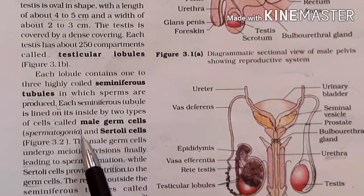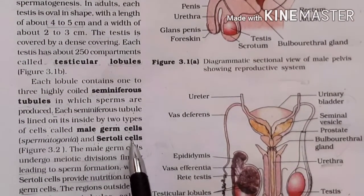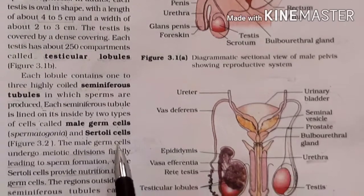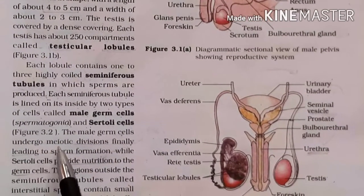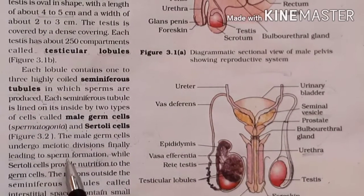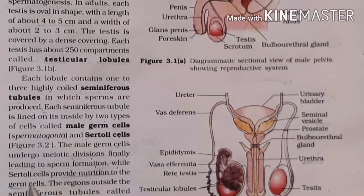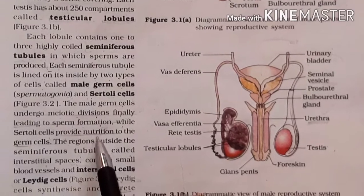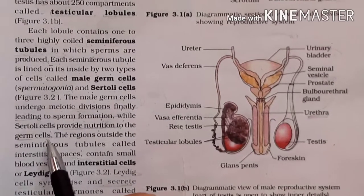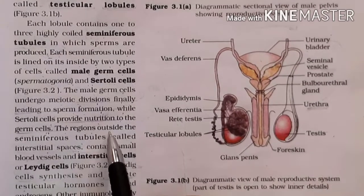Sertoli cells provide nutrition to the male germ cells. The male germ cells or spermatogonia undergo meiotic division, finally leading to sperm formation, while Sertoli cells provide nutrition to the germ cells.